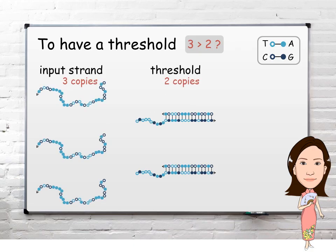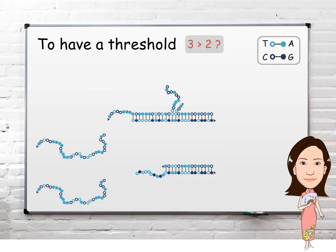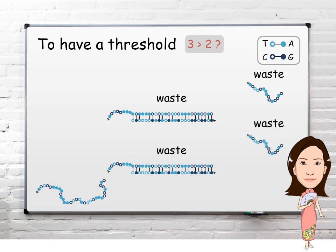If there are 3 copies of the input strand, one input strand will be absorbed by a threshold molecule, another input strand will be absorbed by another threshold molecule, but there is still one more input strand left. The threshold has been exceeded.